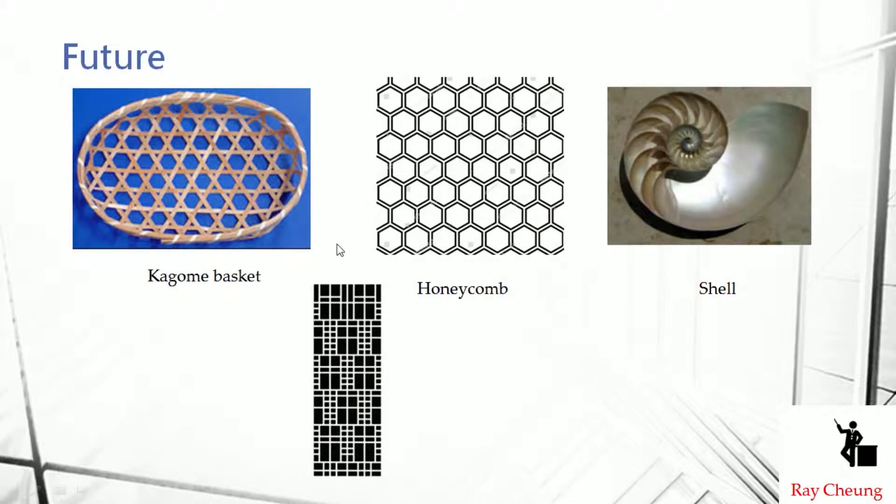I think in the future, diagrid system is a very good option for engineers and architects to think about. Actually when something is repeated, like the honeycomb, once they repeat it, this becomes very stiff. For example, if you connect the shell together one by one, this is also one of the options you can think about in the future. This is what I want to say today. Thank you.